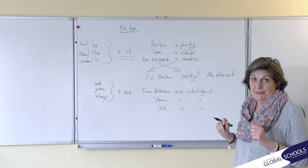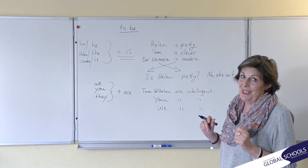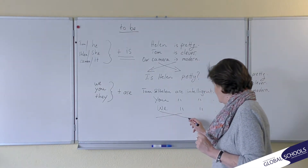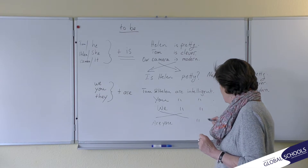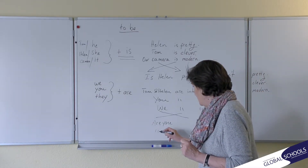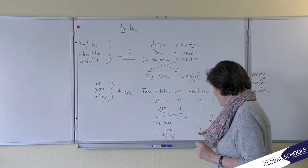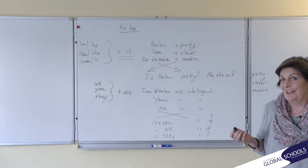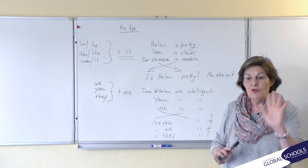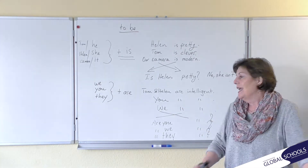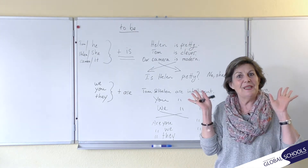How do we make a question with 'are'? Crisscross again: you are intelligent → are you intelligent? We are intelligent → are we intelligent? They are intelligent → are they intelligent? Tom and Helen are intelligent → are Tom and Helen intelligent? It's the same thing — you only switch the order. That's all there is to it.